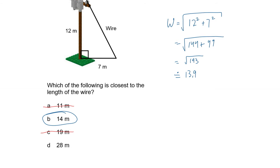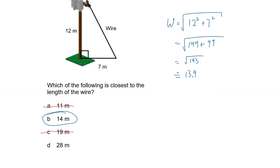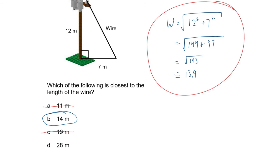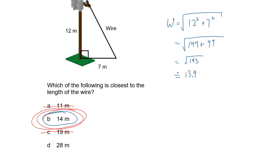Using Pythagorean theorem and actually calculating the answer is your safest bet. EQAO will often put answers that look like they could be right — like 12 plus 7 is 19, so it looks plausible. EQAO often puts common-mistake answers as the options, so be careful with multiple choice that you aren't selecting the first answer that comes up. Make sure you've completed every step. In this case, 13.9 is almost 14, so that's the correct answer.